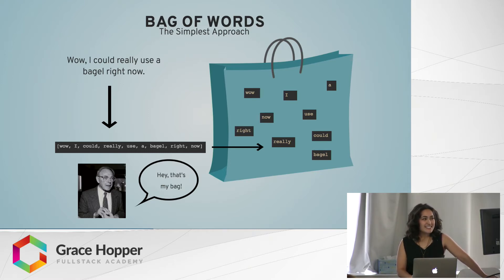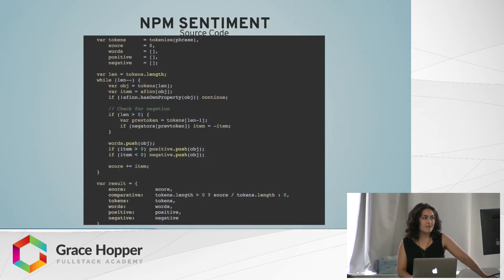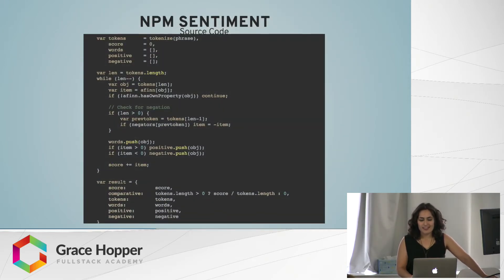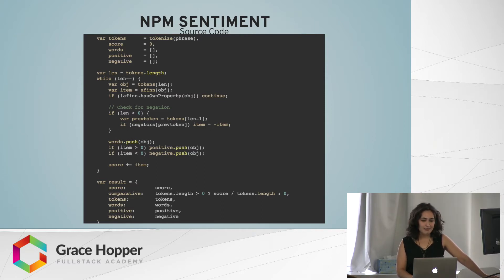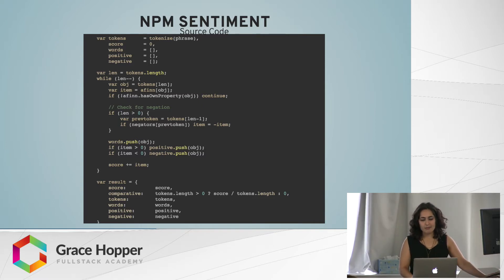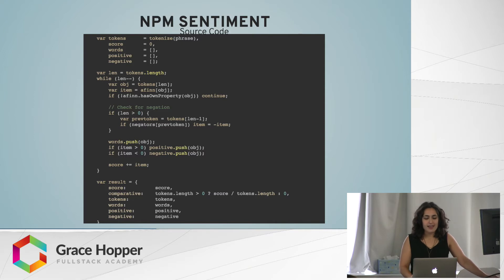In fact, it's even simpler than it looks because there are several NPM modules that do it for you. The most popular one is called sentiment — just the word sentiment. This is an excerpt from its source code. If you take a gander, you'll notice that it is pretty much exactly what bag of words describes. It tokenizes a phrase into words with a tokenize function. It performs a simple negation operation, which switches the polarity of any word preceded by a negator, like 'not' or 'can't.' And it puts negative and positive words in their own arrays, and then adds all the word values into a single score value.